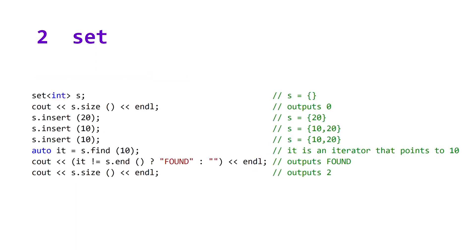Taking a look at our code example, after we initialize our set, the size of our set is equal to zero. We then insert the values 20, 10, and 10, and our set then contains the values 10 and 20 in sorted order. We then make a call to the method find, which will return us an iterator either to the value if it exists in our set, or to what they call the past-the-end element, which you can retrieve by calling the end method. So due to the fact that 10 is in our set, the second last line will output 'found', and at the end of this code example, the size of our set is equal to two.